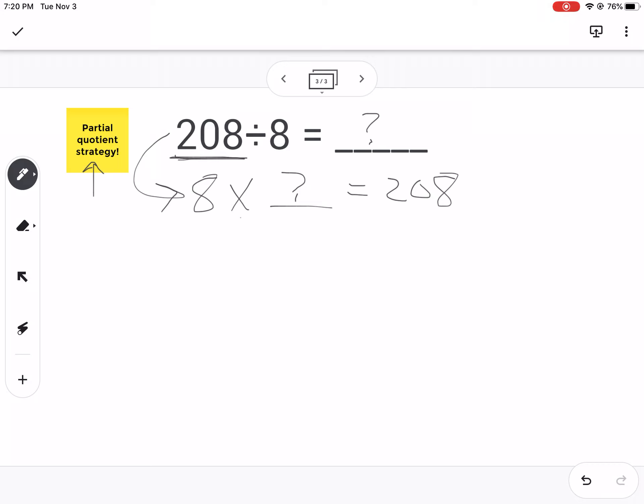And the way we do it is we draw this little diagram here, and we put the 8 on the outside and the 208 on the inside. Smaller number, the divisor is on the outside, 208, the dividend is on the inside.